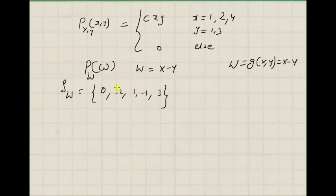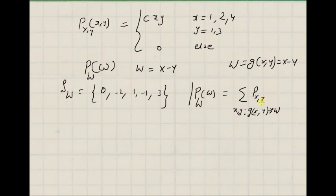Now our goal is to find the probability mass function at each of these values in the range. Once we have this range, we can find the probability mass function of w. By definition, the probability mass function of a function of two random variables is given by the following formula: summation over all values of x, y that map to the new random variable w from the original joint mass function. That is, for a given value of w, we add all the values in the joint mass function for which the (x, y) value maps to the given w.